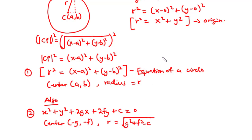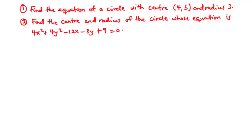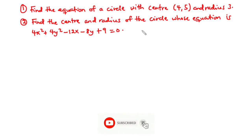Now let's solve an example for each. Question 1: Find the equation of a circle with center (4, 5) and radius 3. Question 2: Find the center and radius of a circle whose equation is 4X² + 4Y² − 12X − 8Y + 9 = 0. For question 1 we find the equation given center and radius; for question 2 we find center and radius given the equation.